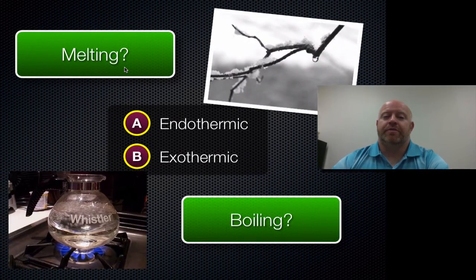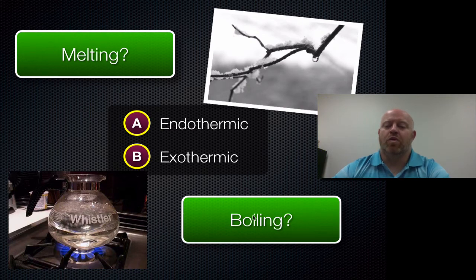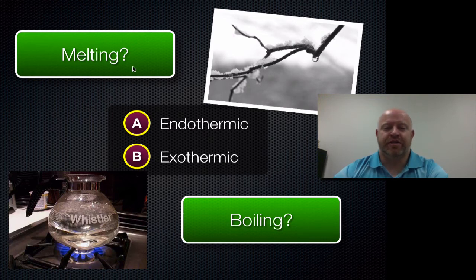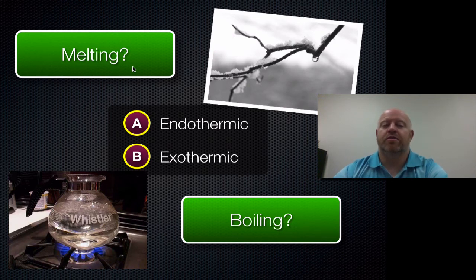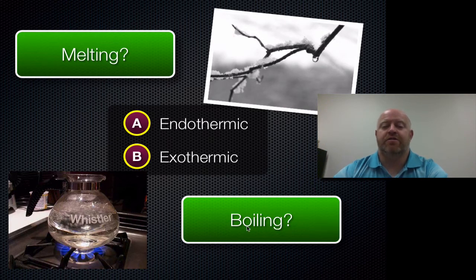Let's talk about melting and boiling. Melting is going from solid to liquid; boiling is going from liquid to gas — both moving the same direction on the heating curve. To melt something, do we take energy in or release it? We're going from solid to liquid, and liquids have a higher energy state, so you have to absorb energy. If it's absorbing energy, by definition it's endothermic. The same applies to boiling — by absorbing energy you go from the liquid state to the gaseous state, so boiling is also endothermic.